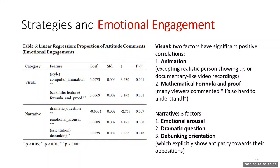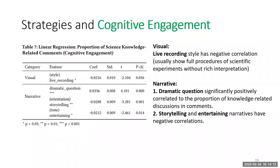For emotional engagement, regression analysis showed two significant visual factors and three significant narrative factors. In the visual category, animation and mathematical formula positively correlated with viewers' emotional expressions. In the narrative category, emotional arousal has the most significant correlation, while dramatic question and debunking orientation are also relevant to emotional engagement. For cognitive engagement, regression models show that live recording viewer style has a slight negative correlation. In the narrative category, dramatic questions strongly correlate to cognitive engagement, while unrealistic storytelling and entertaining tone decrease the proportion of knowledge-related discussions in comments.